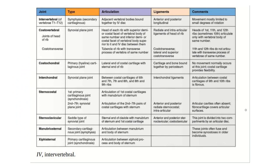Assalamu alaikum, I am Dr. Usman and today we are going to talk about the joints of the thoracic bone. As we know there are several bones in our thoracic cage like ribs, sternum and vertebrae. There are several joints made between these bones so that during respiration our chest can move and we can accommodate the expanding lungs. That is why so many joints assist in the movement of thoracic bones.